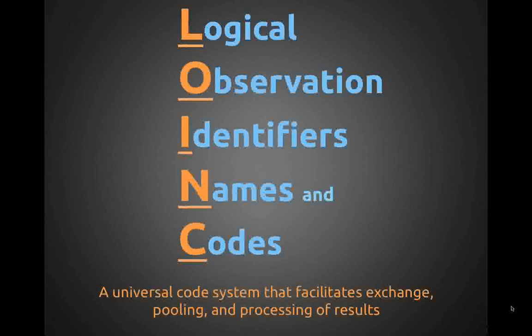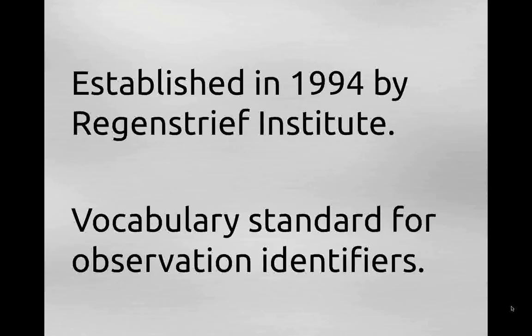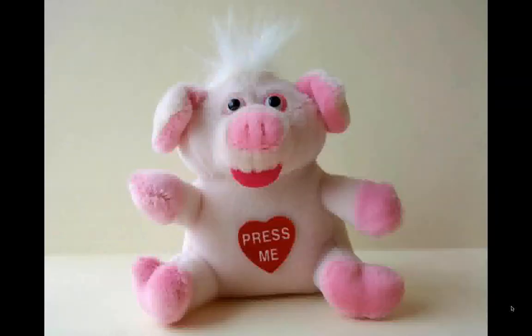That was the birth of LOINC — Logical Observation Identifiers Names and Codes. It's a code system designed to facilitate exchange, pooling, and processing of results. It was established in 1994 by the Regenstrief Institute, Clem, and a number of collaborators gathered from around the world. It's designed to be a vocabulary standard for observation identifiers. Our mascot is a pig — LOINC, like 'oink,' the sound a pig makes.